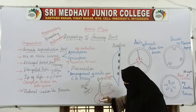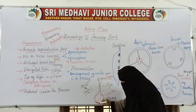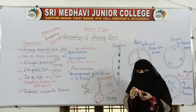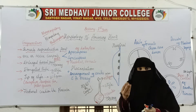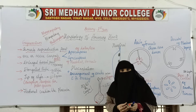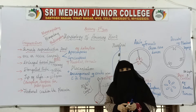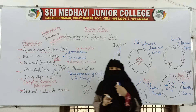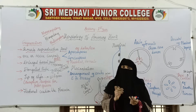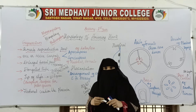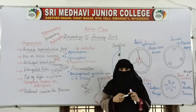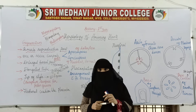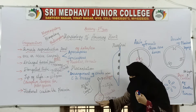These ovules are attached to the ovary through a cushion-like structure. Ovules can be one or many — inside a single ovary, we can find one ovule or more than one ovule. The cushion-like structure that attaches the ovules to the ovary is called the placenta.